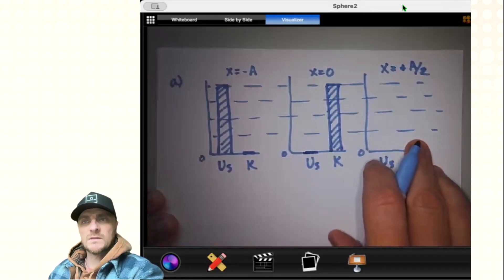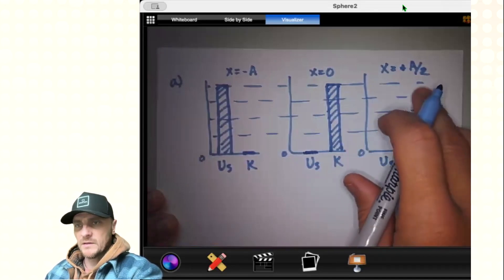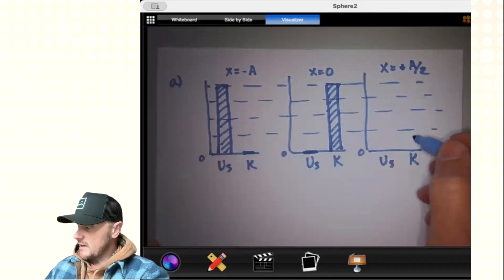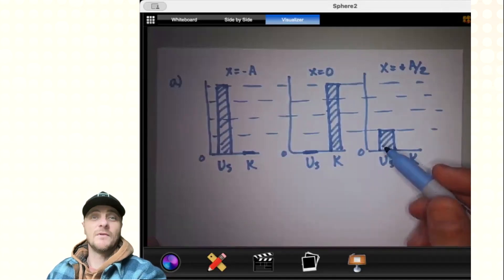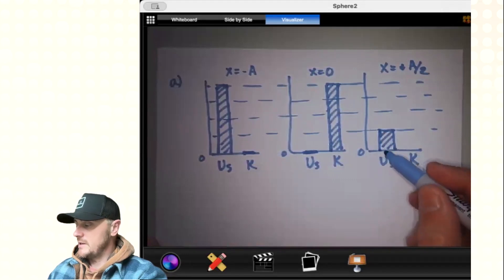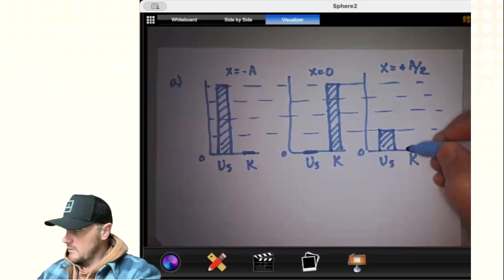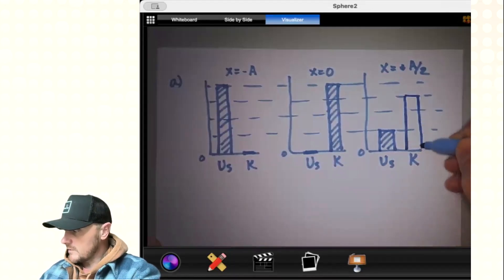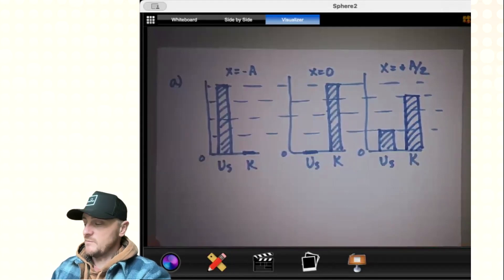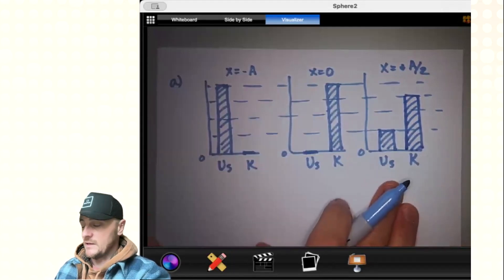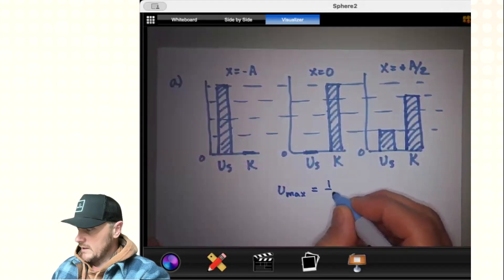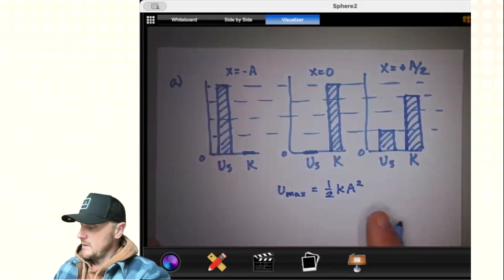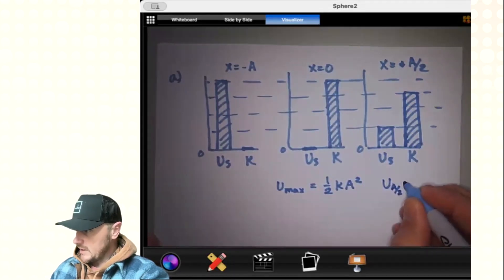But the real question is what's going on at a divided by two? Most students would say we're at the halfway mark, so maybe both have half the mechanical energy. That would actually be incorrect. The correct answer is that a quarter of your mechanical energy is in the form of elastic potential energy and three quarters is in the form of kinetic energy. It's not asking you to justify this but I will quickly show you why. If I have my max u, I would call that one half k a squared. And if I had my a divided by two energy, I would say one half k a divided by two squared.